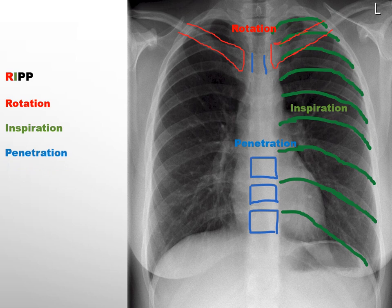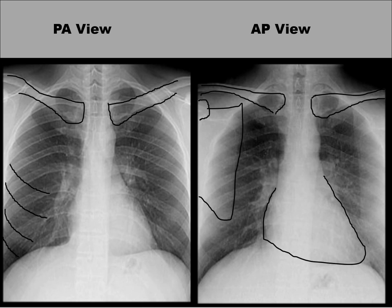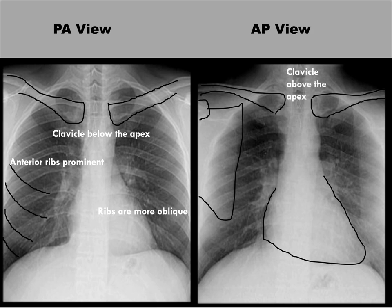To assess penetration accurately, it is crucial to examine the visibility of vertebral bodies located behind the heart. Projection is evaluated by determining whether it is an anterior-posterior or posterior-anterior view. In a posterior-anterior view, the clavicle is visible below the apex of the lungs, the anterior ribs appear more prominent, and the ribs appear more oblique in orientation. In an anterior-posterior view, the clavicles are visible above the apex of the lungs, the shadow of the scapula is seen within the lung field, and there is an enlarged heart shadow.